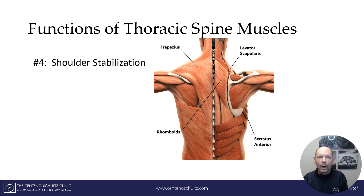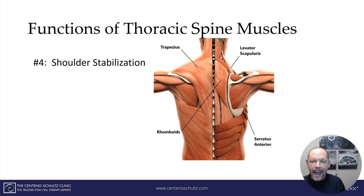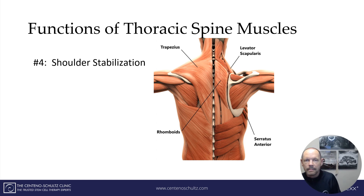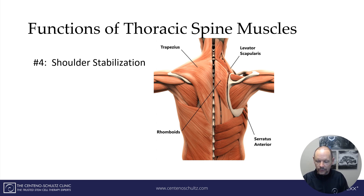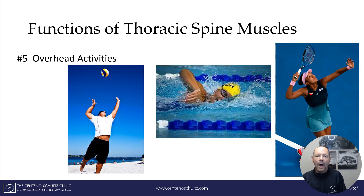The fourth function is shoulder stabilization. The shoulder is such a remarkable joint with an amazing range of motion, and it has to be stabilized by a series of muscles — and those muscles come in part from the thoracic spine.